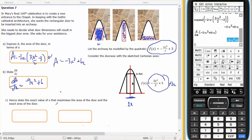Hence, state the exact value of X that maximizes the area of the door and the exact area of the door. So, if I set that derivative equal to 0, that should give me the value of X that is a maximum or a minimum.